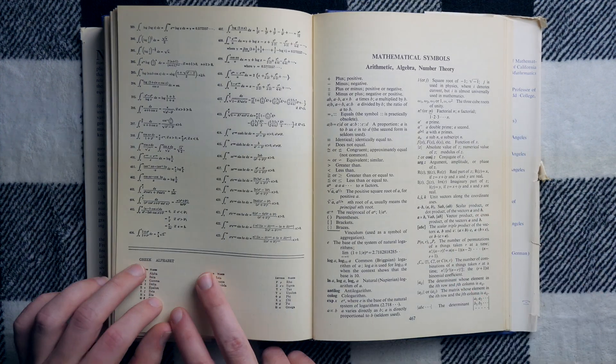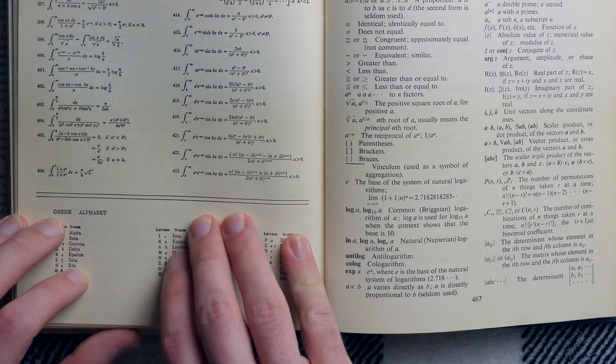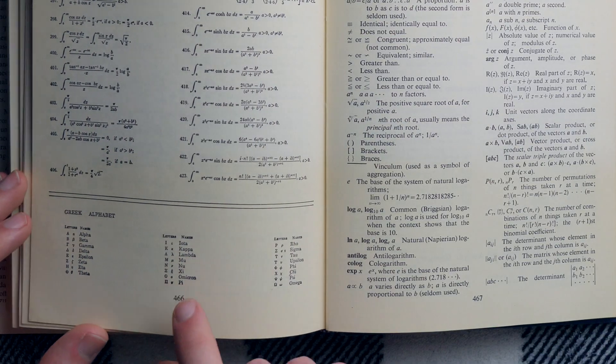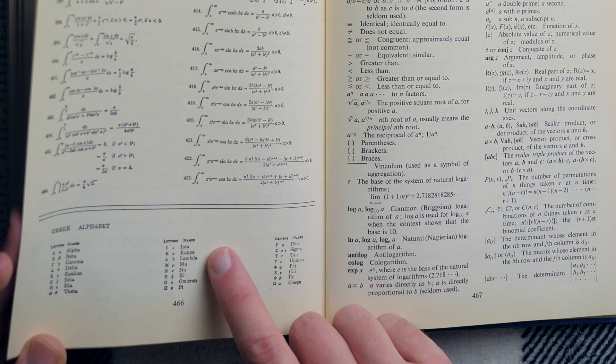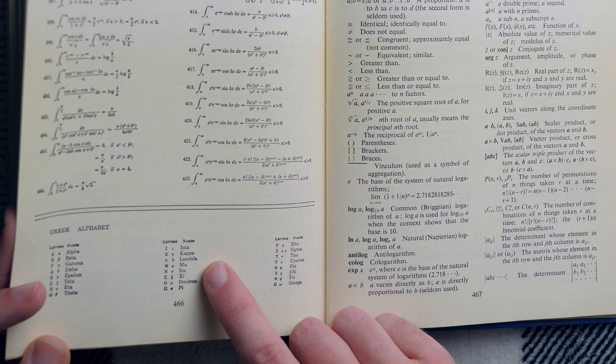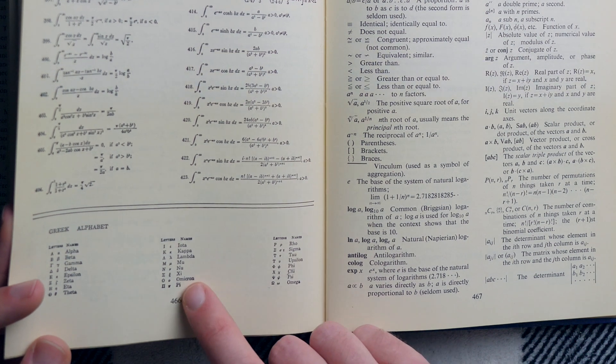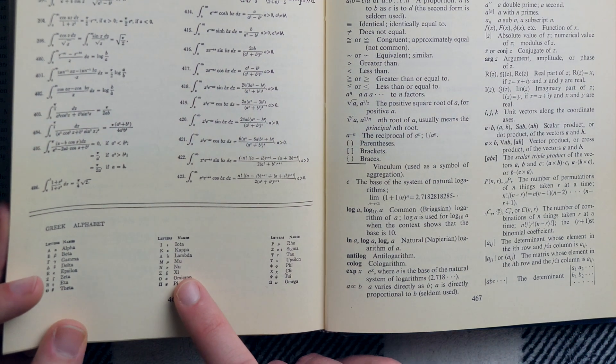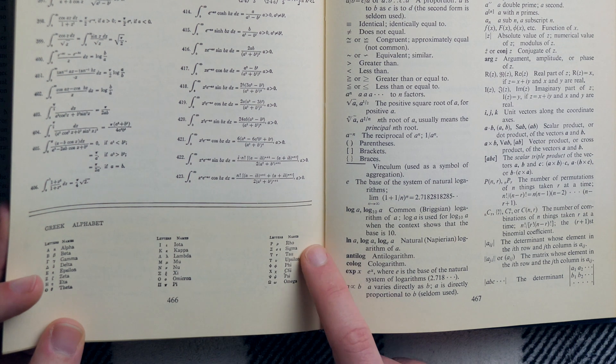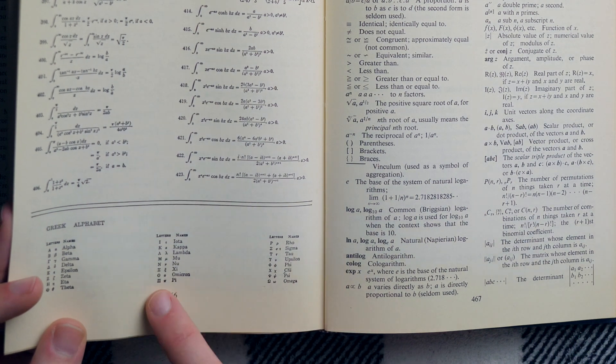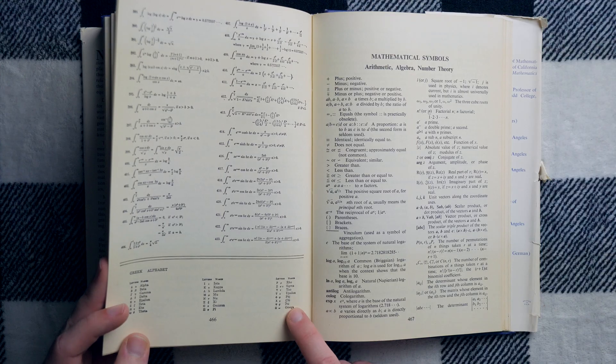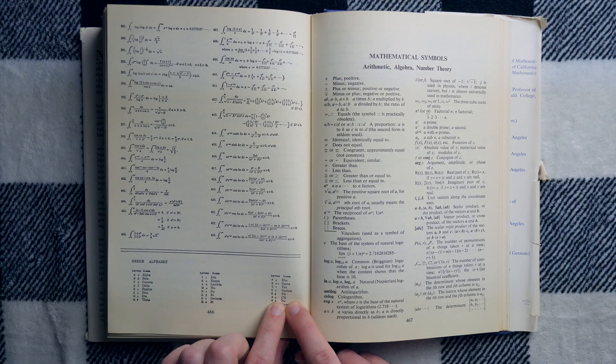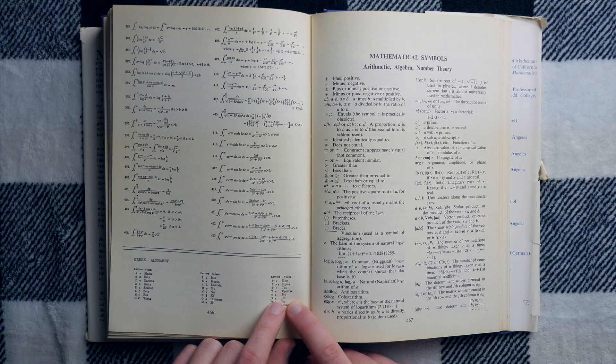Oh, you've even got a Greek alphabet here. Man, this book is just stuffed with so much useful information. I don't know all my Greek letters. I probably should. Theta, iota, kappa, lambda, mu, nu, chi. I just haven't seen it spelled out in a while. C-H-I. There's chi.